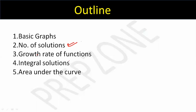Typically, questions come from the number of solutions of intersection of multiple graphs and growth rate of functions. It's an important thing. If you know it, you can save your minus one. A lot of students will get minus one on some questions we'll discuss, but if you know this, you'll be able to convert minus one to plus three.